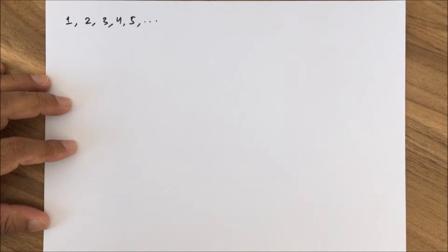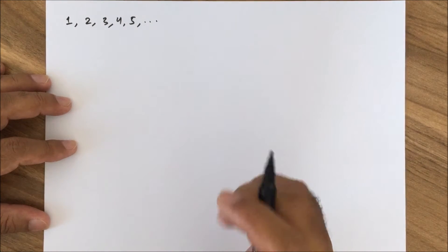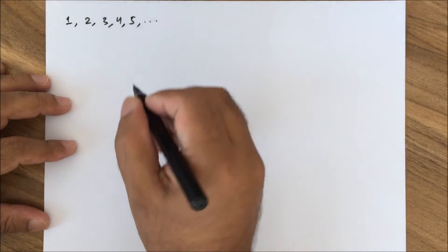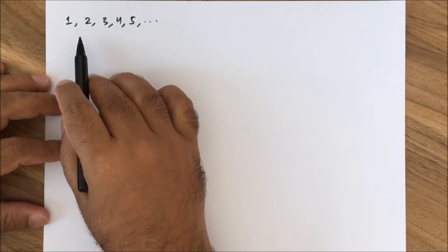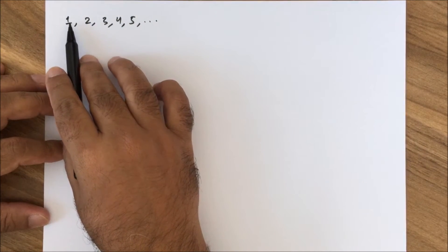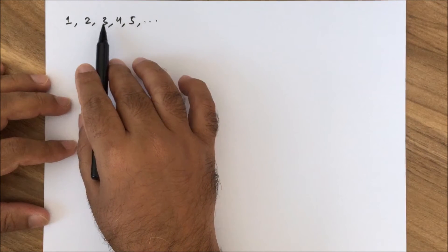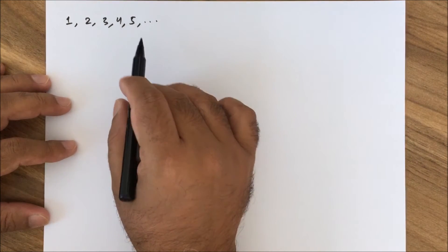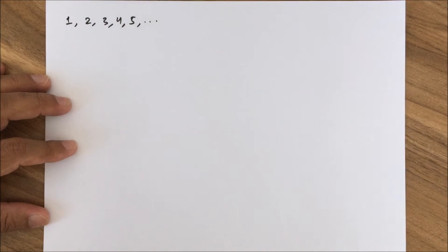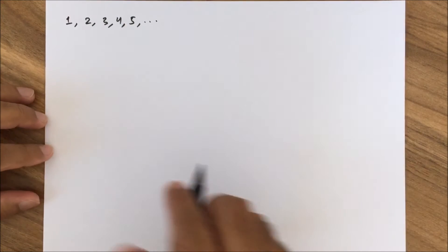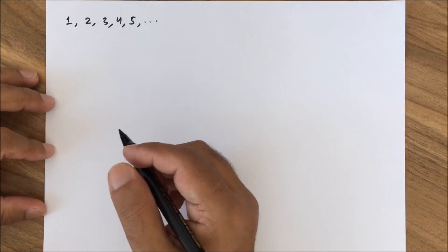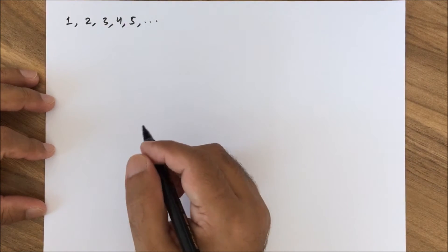The Vedic formula 'one more than the one before' gives us a method to generate numbers. If you add one to one, it becomes two. And if you add one to two, it becomes three, and so on. In Arithmetic, we are actually studying the behavior of the numbers. And as people are different and special, every number is special and different. When we get to know that number, it becomes our friend.